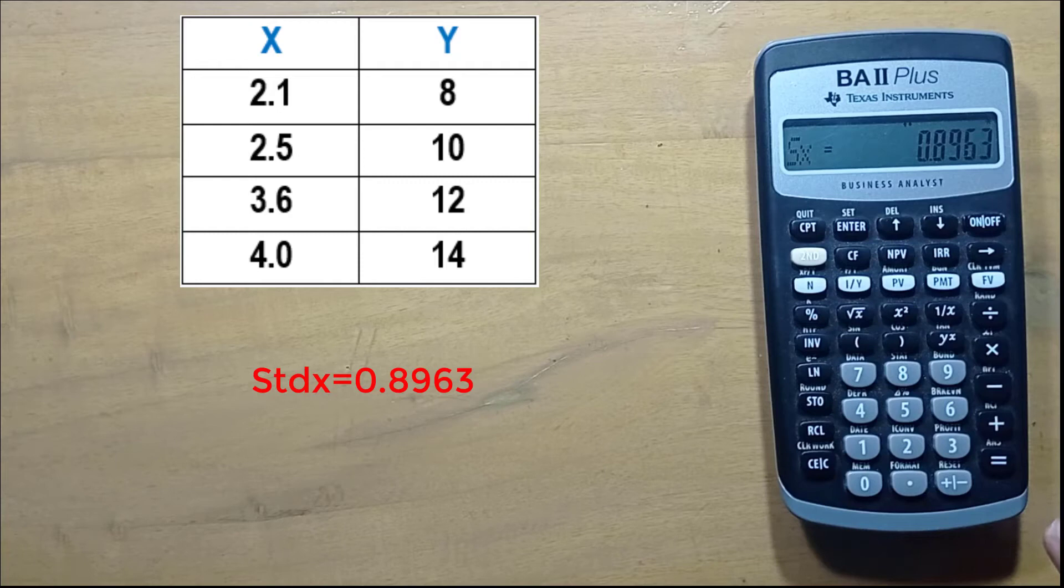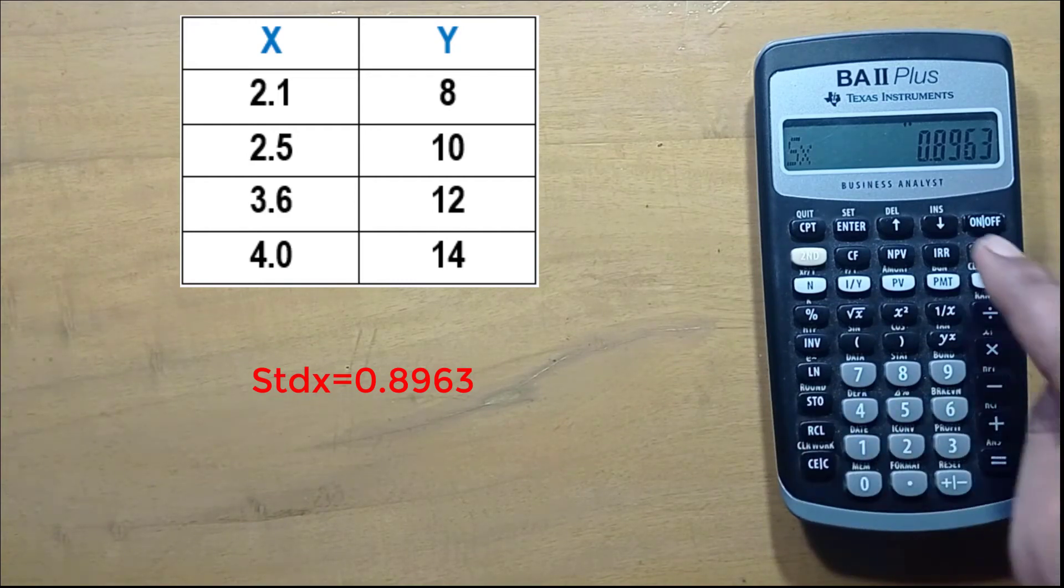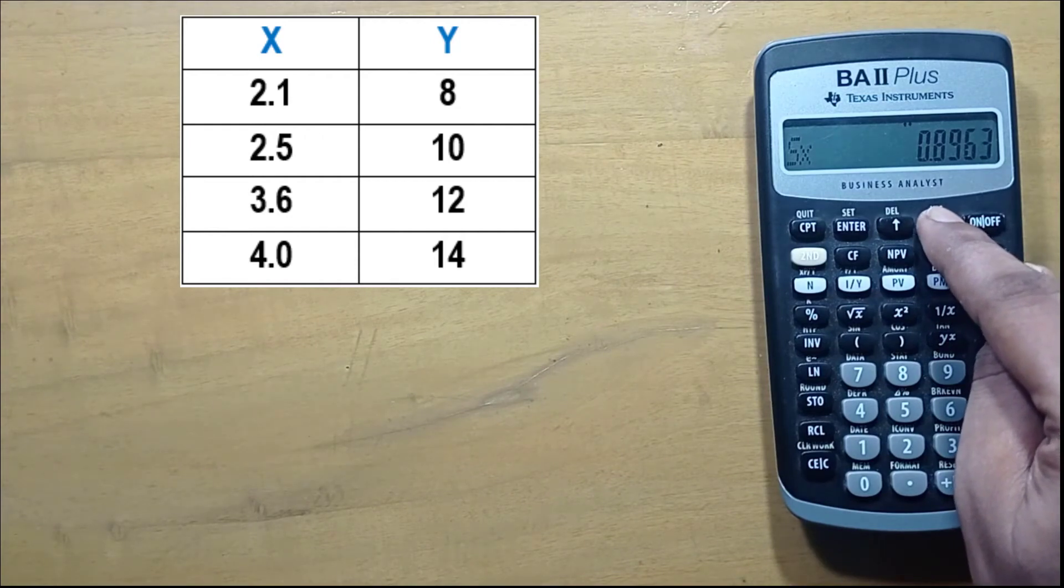We have to save this number in our calculator, or we can write it on paper. I am saving it by pressing STO and 1. Press down arrow.